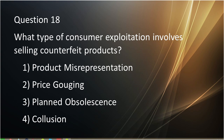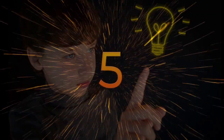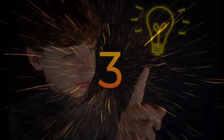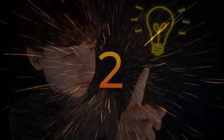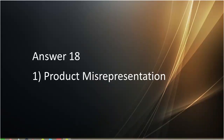Question number eighteen: What type of consumer exploitation involves selling counterfeit products? First is product misrepresentation. Second is price watching. Third is planned obliteration. Fourth is collision. Answer to question number eighteen is product misrepresentation.